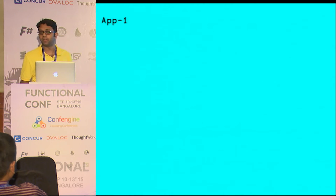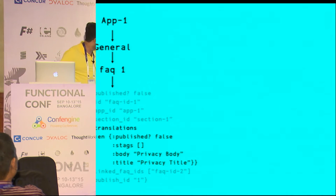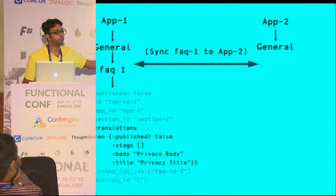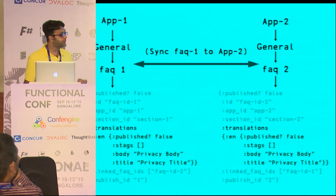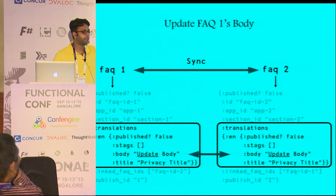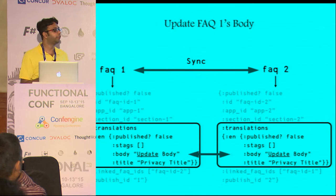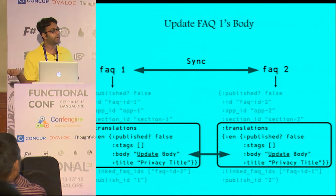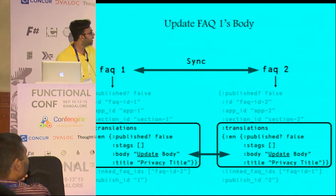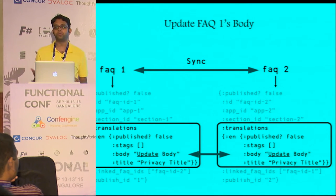Here is an example: there is one app which has a section called general, and within that there is an FAQ with a translation and some metadata. Then there is another app with another section and we want to sync FAQ 1 to app 2. This will create another FAQ with the same translations as the body, and if I update one body, the backend will automatically update that. This quickly became really hard to try different combinations. What happens if I delete one FAQ? Does that get deleted? What happens if the app is deleted? What if there are five different apps and so on?